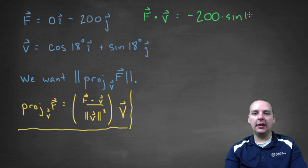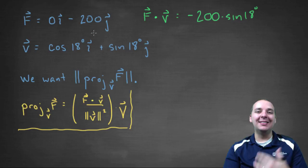We will have negative 200 times sine of 18 degrees. Remember with the dot product you get a scalar, so we're not going to have i's and j's in this dot product.